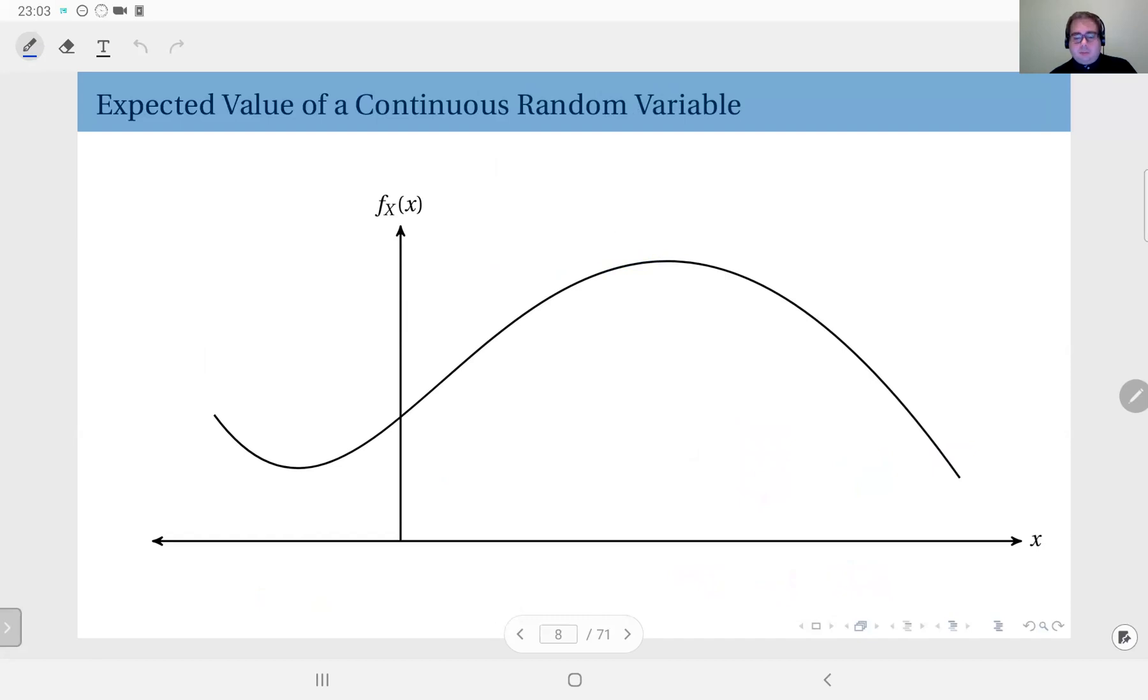What about continuous distributions? Let's say this is a continuous distribution, a pdf. Essentially, to derive the expected value of a continuous distribution, we're going to use a discretization on this pdf and approximate this with a discrete distribution.